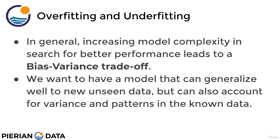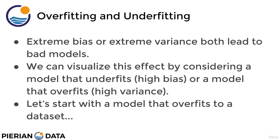We want to have a model that can generalize well to new unseen data, but can also account for variance and patterns in the known training data. Extreme bias or extreme variance can both lead to really poor performing models. To better understand bias versus variance and overfitting versus underfitting, we can visualize the effect by considering a model that has high bias — that is underfitting — or a model that overfits — that is having high variance.